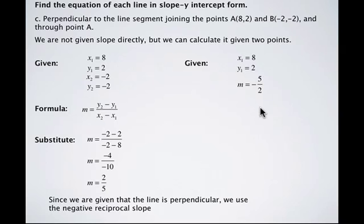And as I said before, our slope, which is the negative reciprocal of 2/5, which is -5/2, is what we're going to use. Now our formula, the point-slope formula.